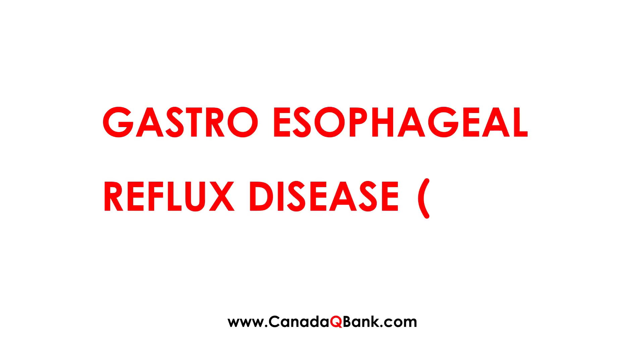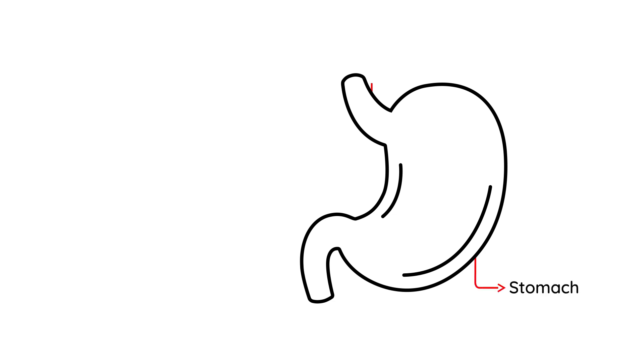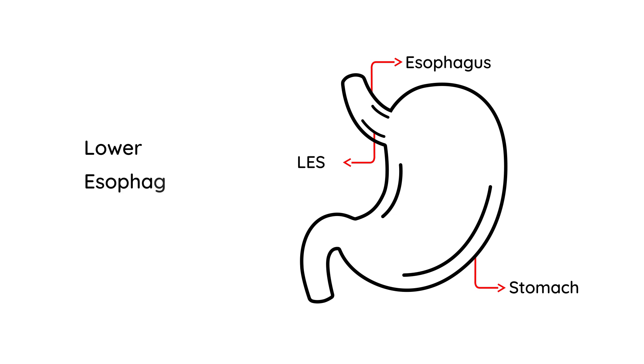Gastroesophageal reflux disease, abbreviated GERD, is a very common condition. I'll draw a diagram of the stomach — above the stomach is the tube called the esophagus, and at the lower end of the esophagus you have muscles known as the LES, which is the lower esophageal sphincter. The LES plays a very important role in GERD.